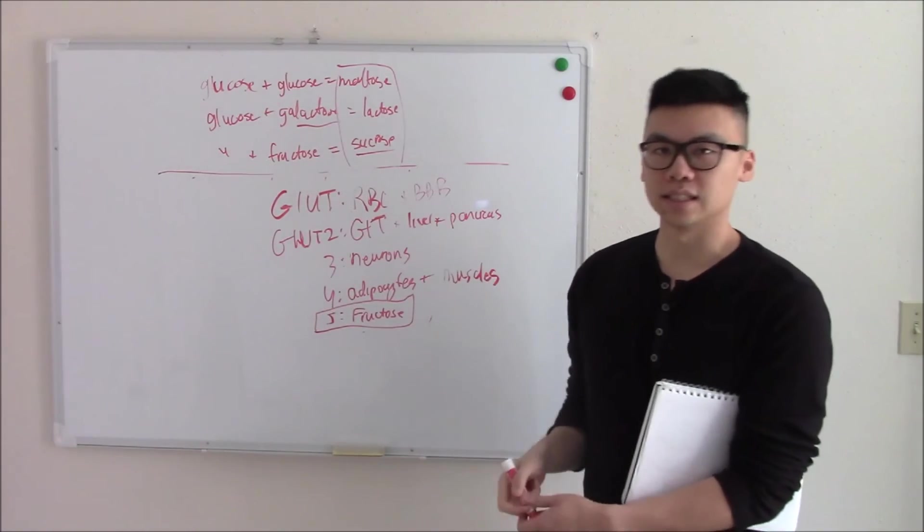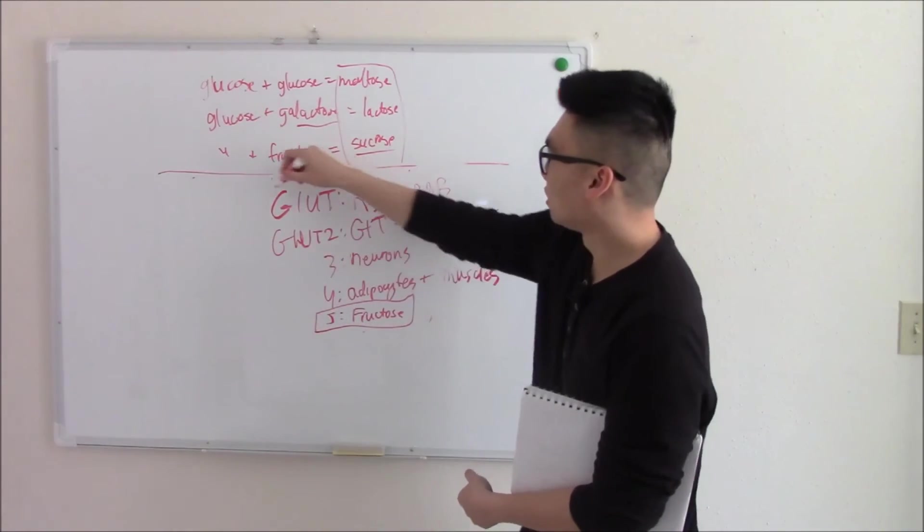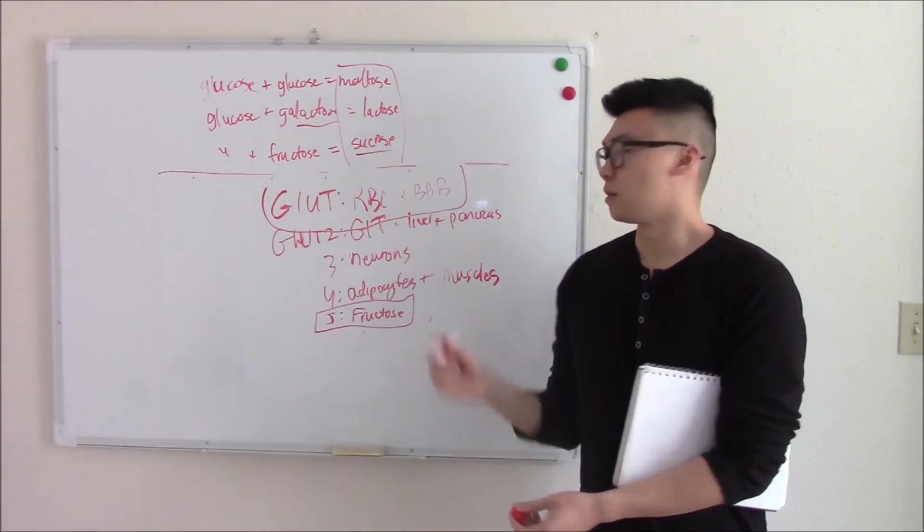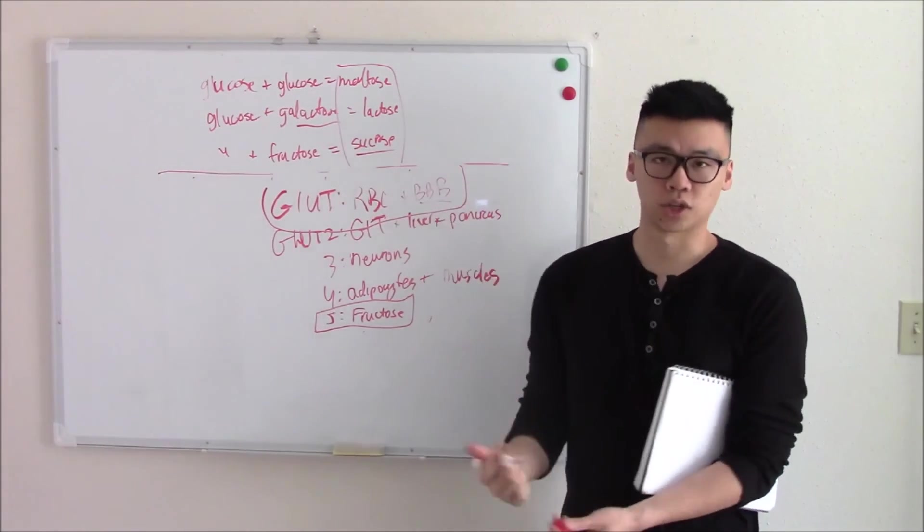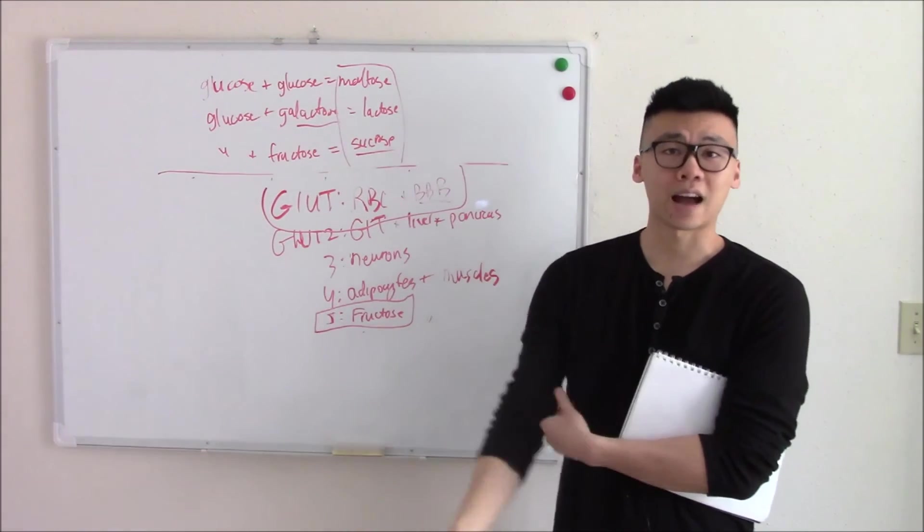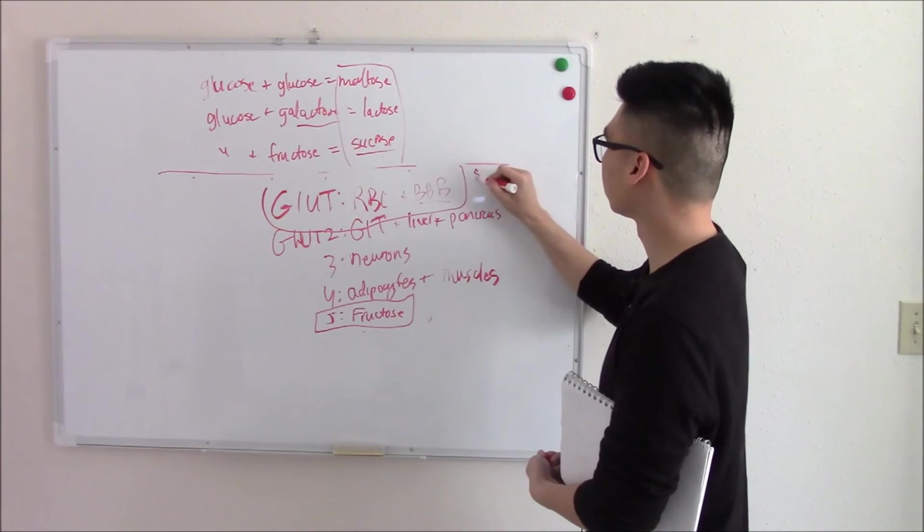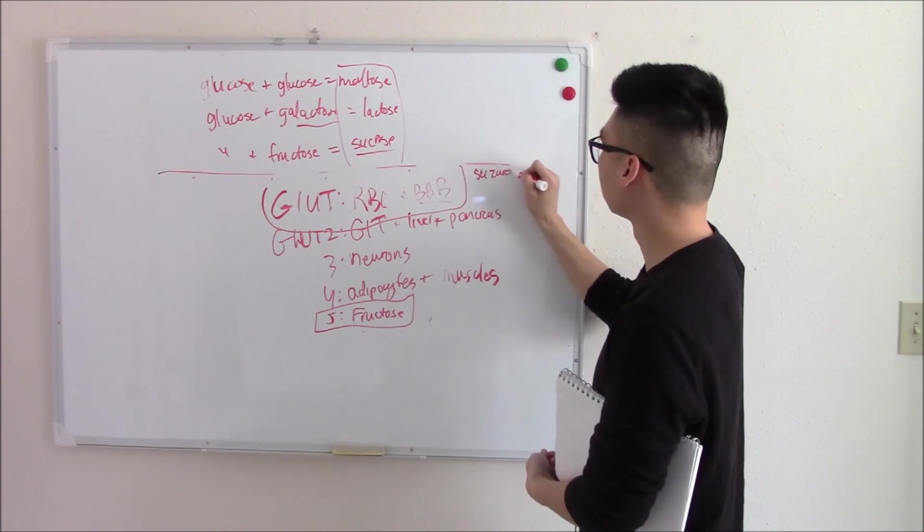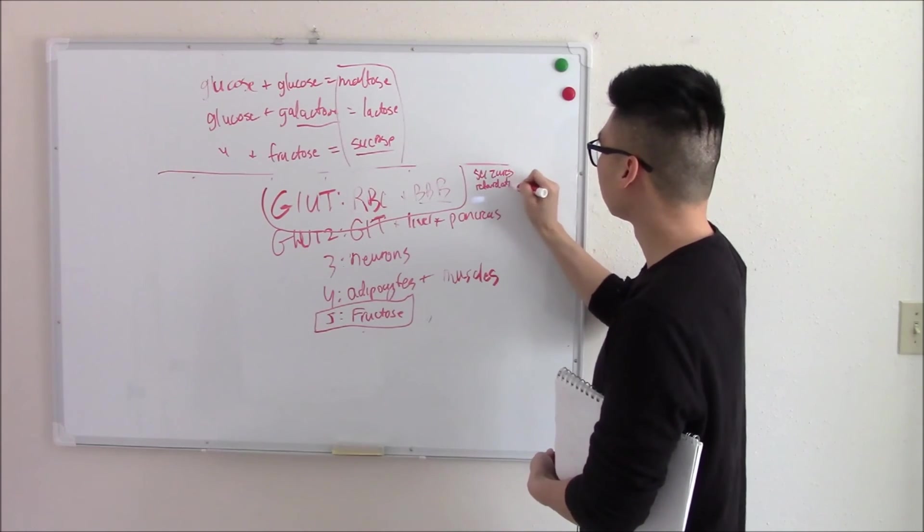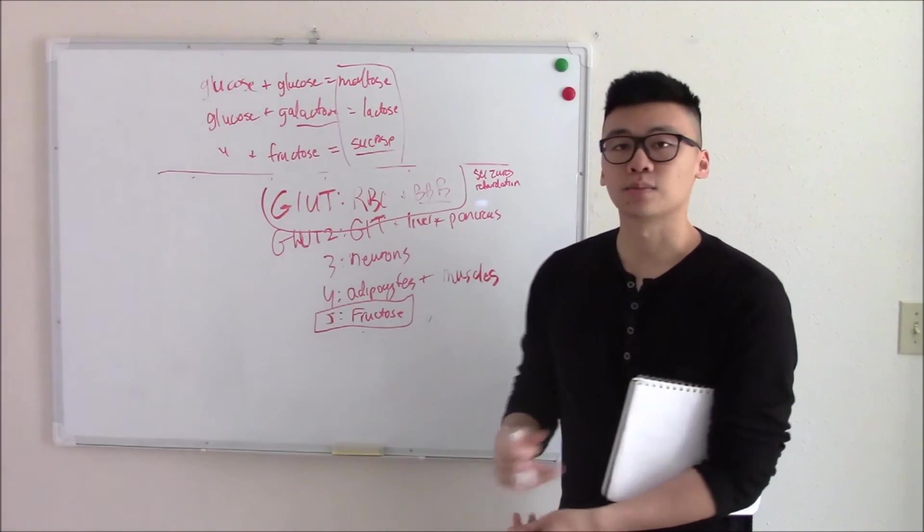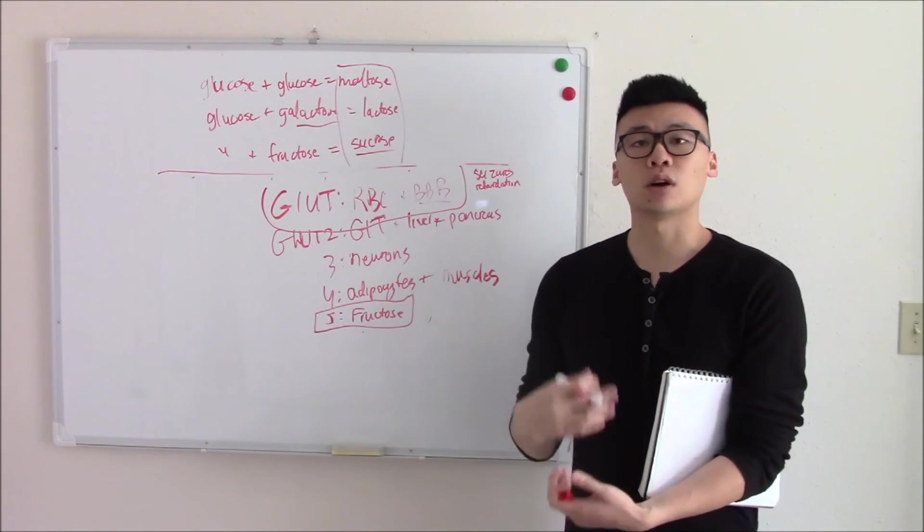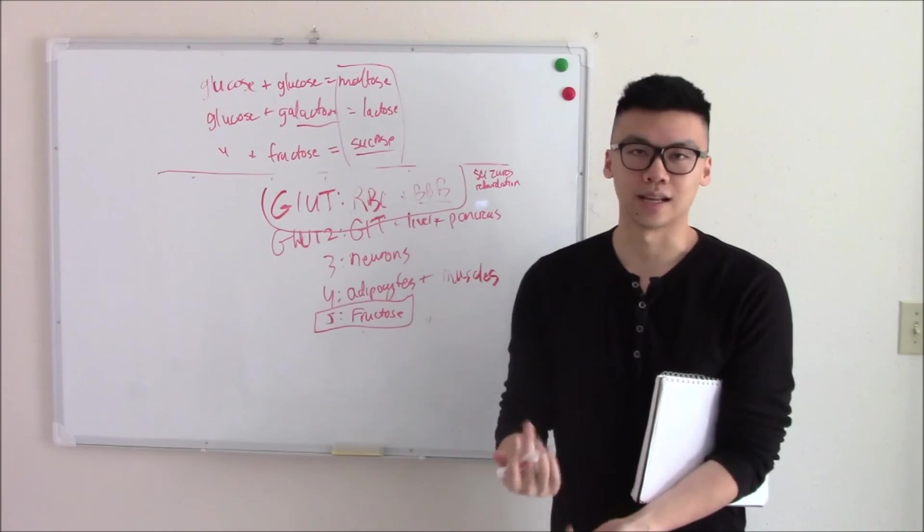Now there's some clinical significance to these. For example, if you have a GLUT 1 deficiency, you're going to lack sugar in your blood-brain barrier. You're going to have low sugar in your brain, CSF. Patients that have this, they have refractory seizures. They have retardation. And you treat this by having low glucose diet because you can't take it up. Instead, you use alternative fuels like high fat, high protein diets.